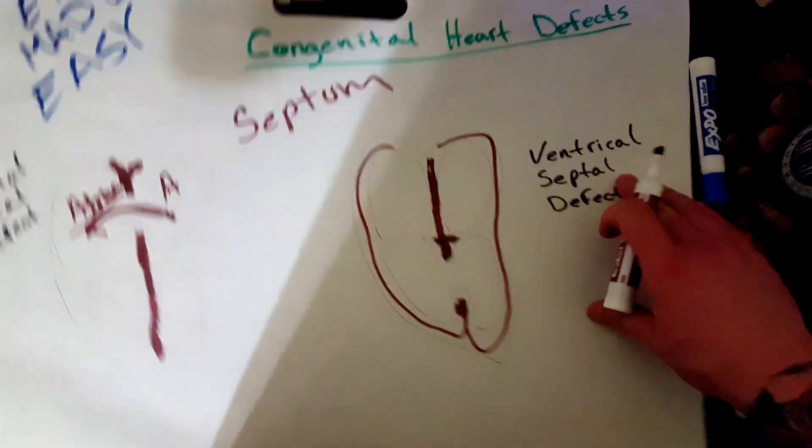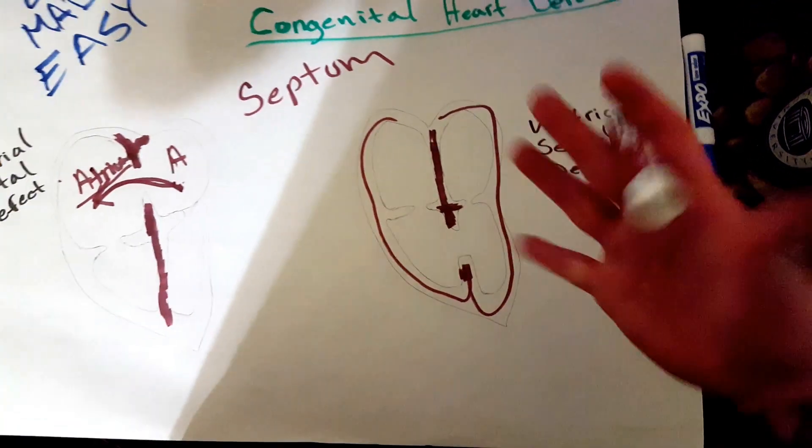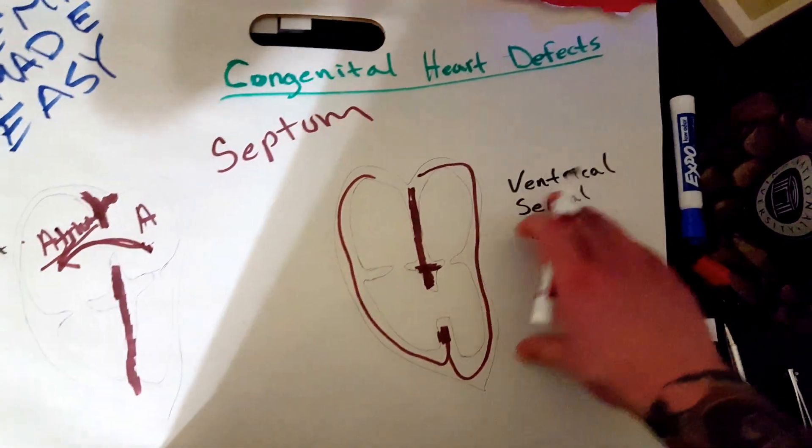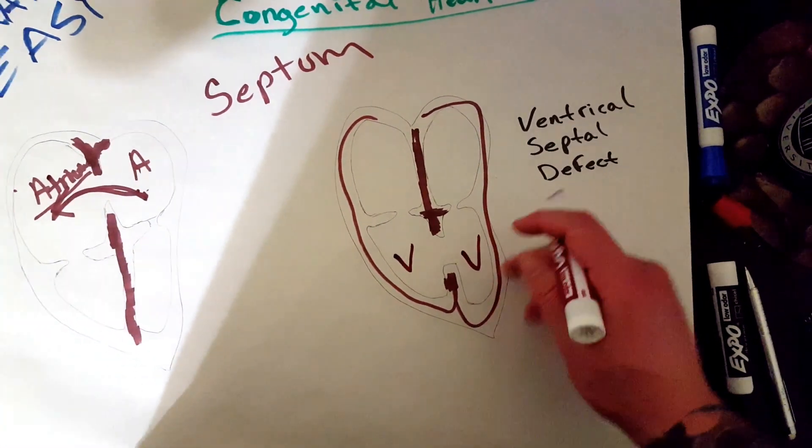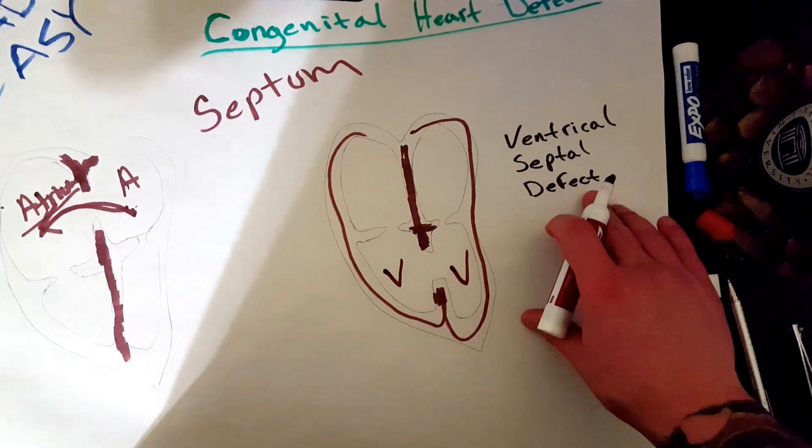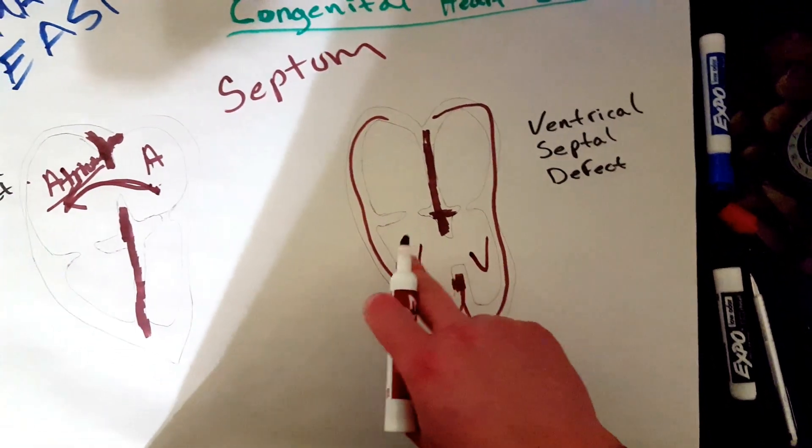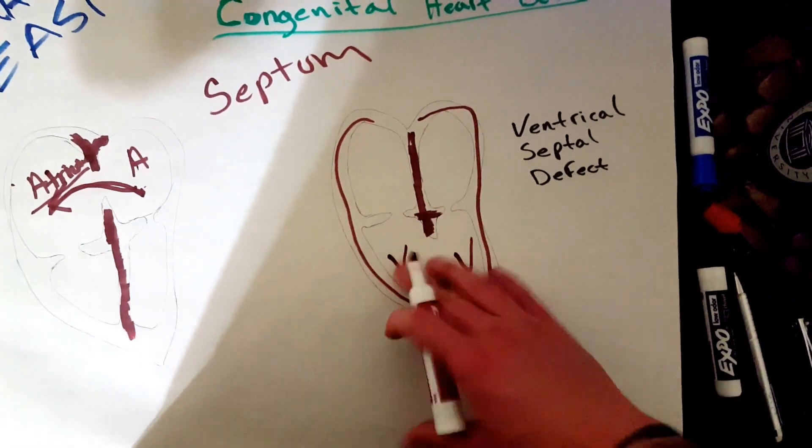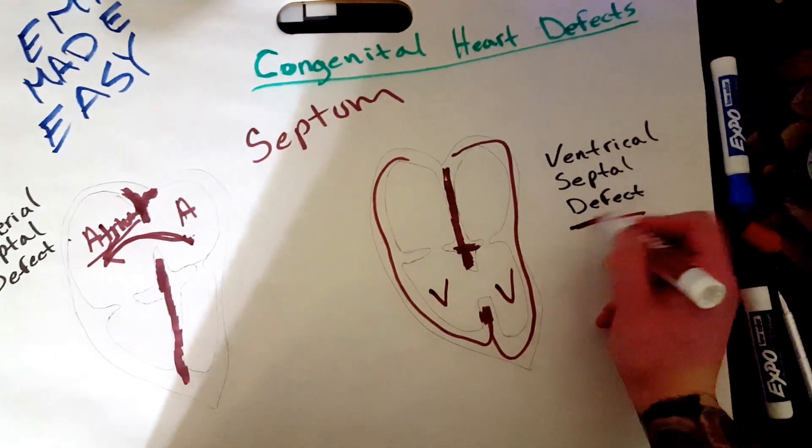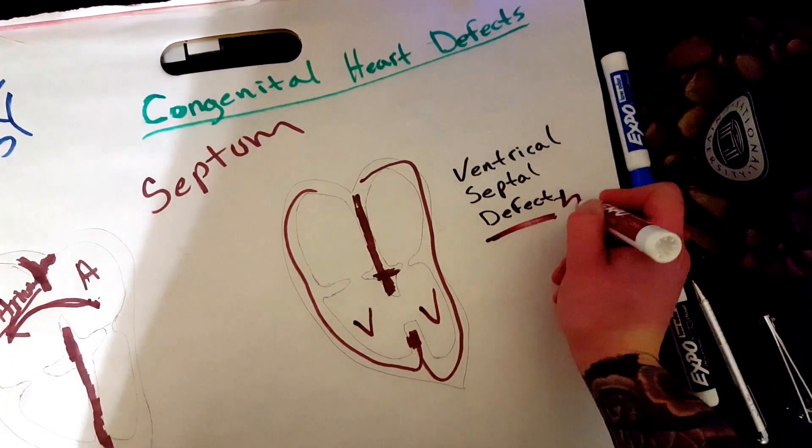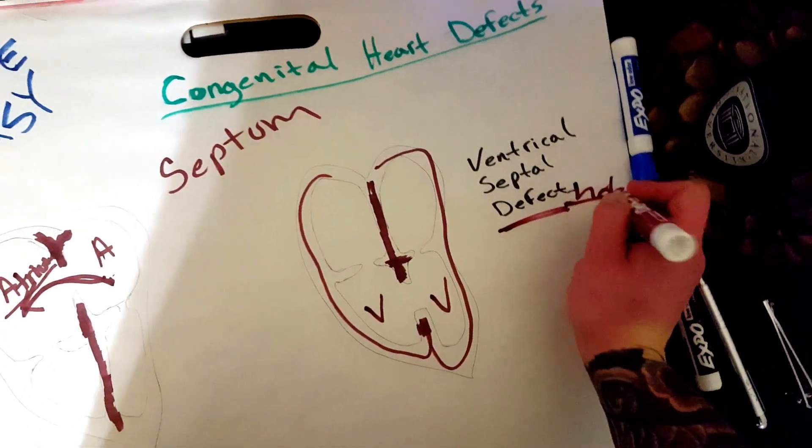Now, you also have the ventricular septal defect. What do you think that means? That means it's in the ventricles. So, these chambers down here are called the ventricles. So, if you have a ventricle septal defect, that means that you have a hole between the two ventricles. That's all that means. As simple as that. Defect,